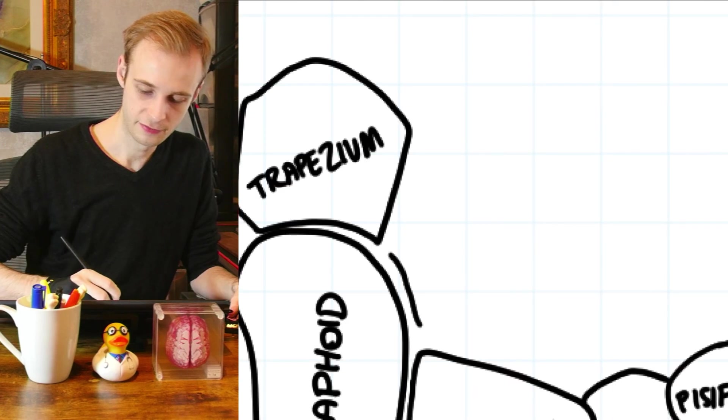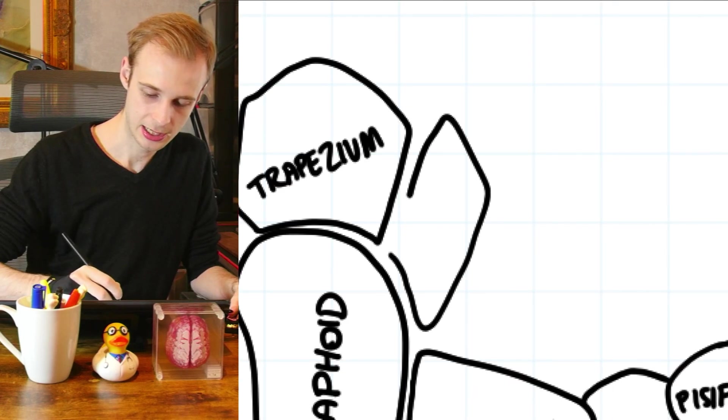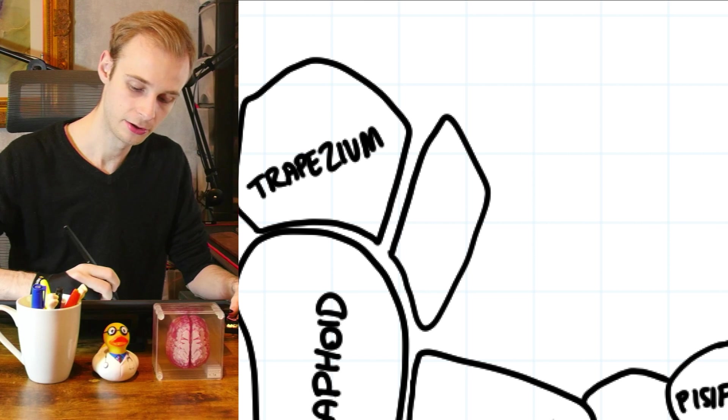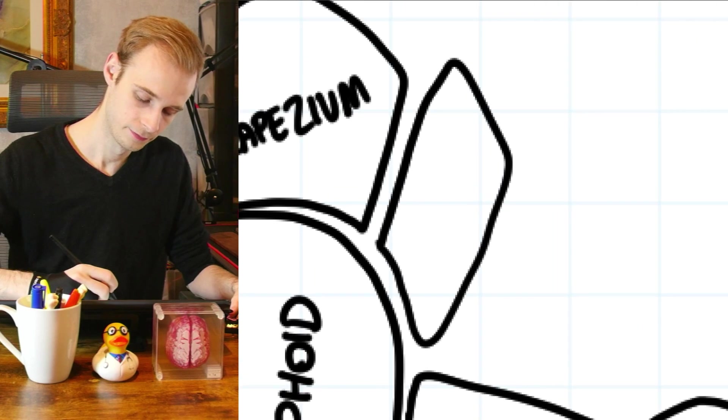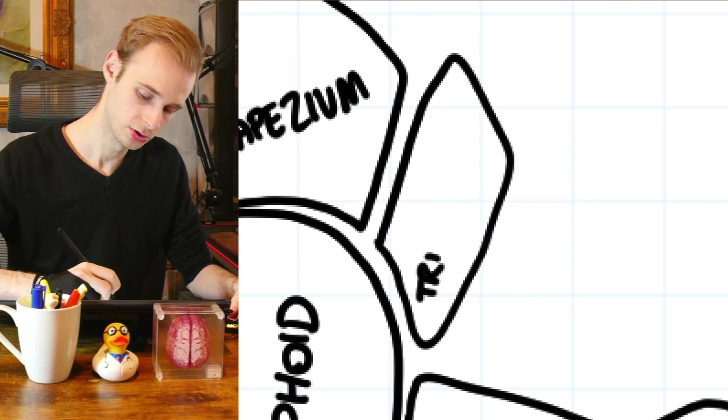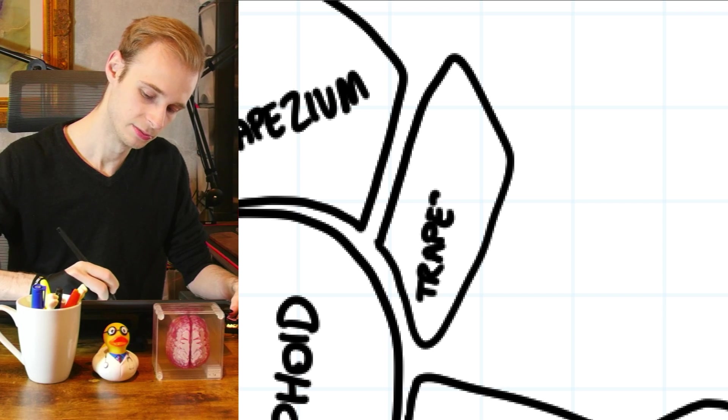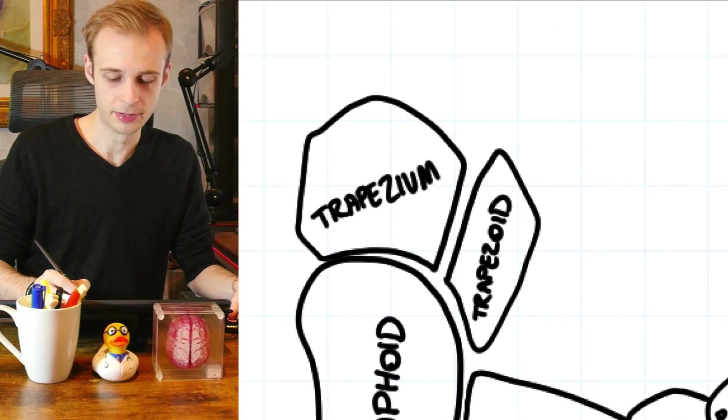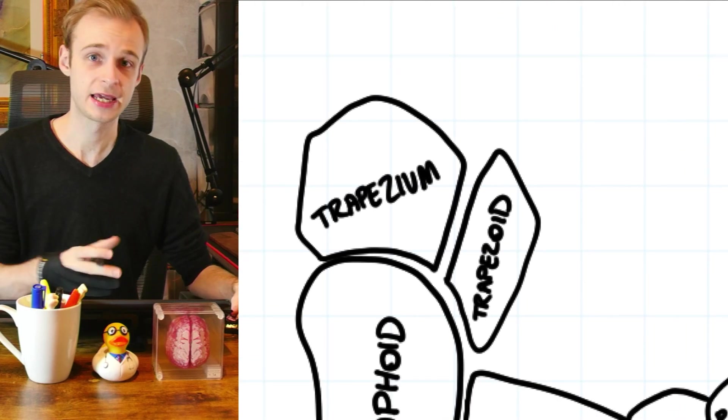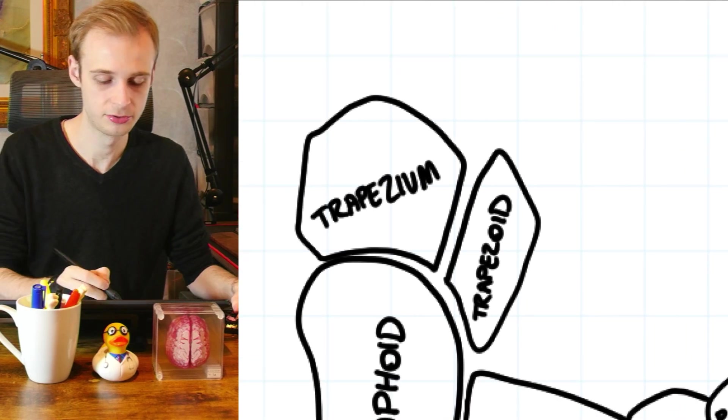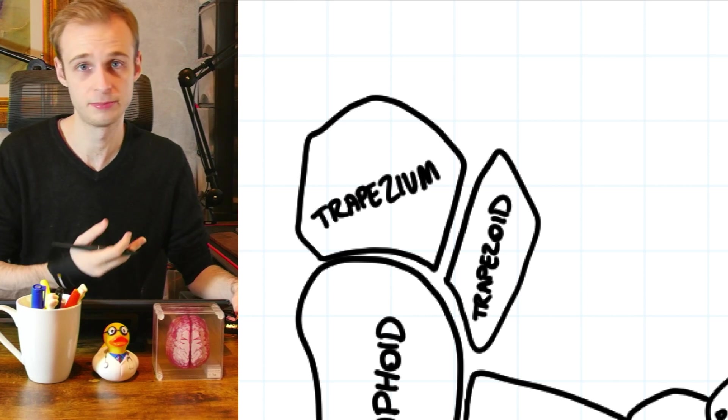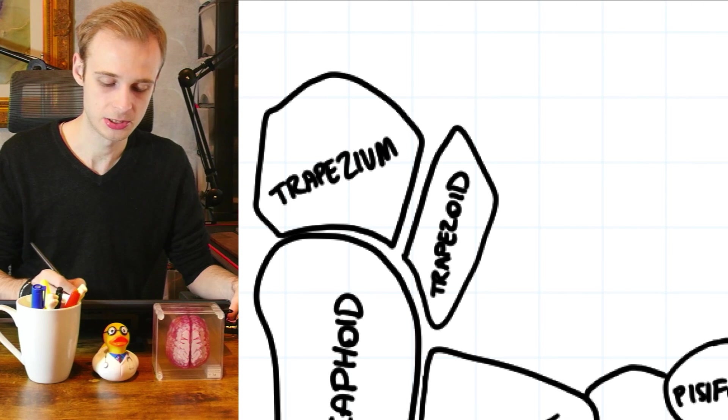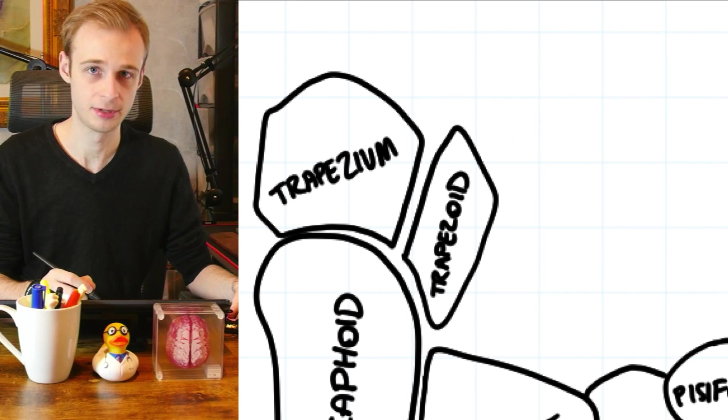And then filling in this space here is a similar bone called trapezoid which comes from the same root but is a smaller bone than trapezium. Now these two together are sometimes called the multangular bones. Trapezium is the greater multangular bone because it's much bigger, trapezoid is the lesser multangular bone.